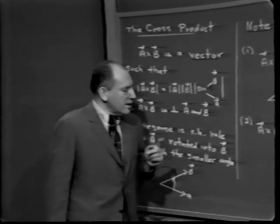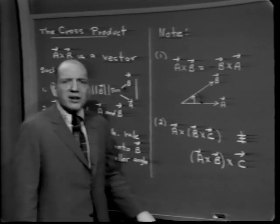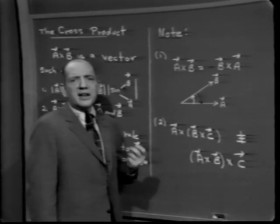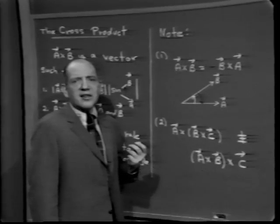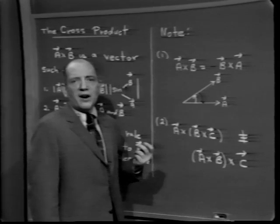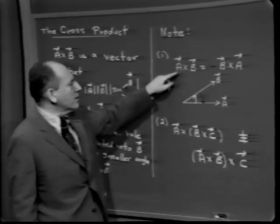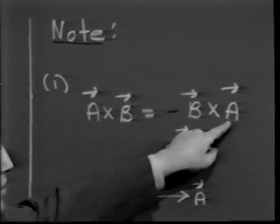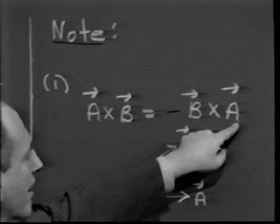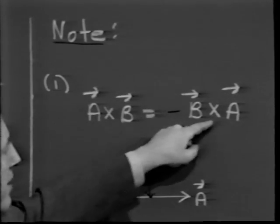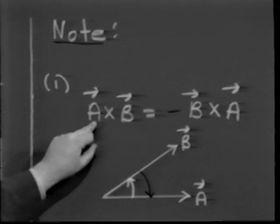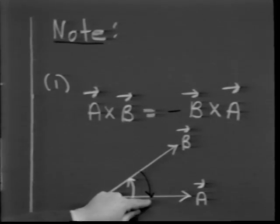Almost every rule we'd like to hold true about numerical multiplication is false for vector cross products. For example, a cross b is not equal to b cross a. In fact, a cross b is the negative of b cross a. Both have the same magnitude and the same direction — each is perpendicular to both a and b — but the sense is different.